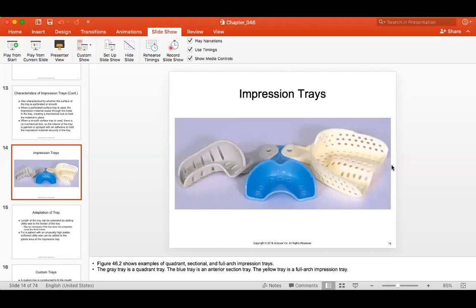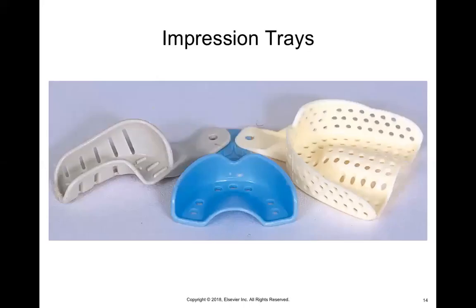All right, so we're going to continue on. We ended talking about the different types of impression trays that we can use. You have your quadrant trays, you have a sectional tray, and then you also have a full tray.